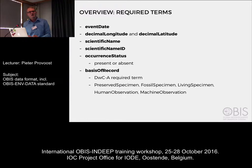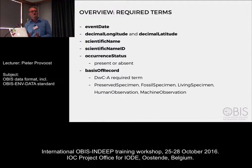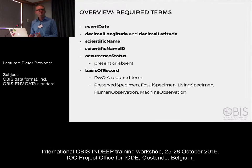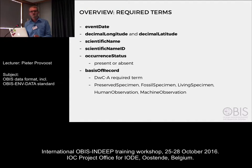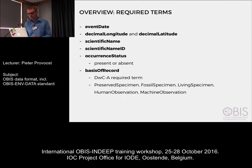This is an overview of our required terms. We have seven that you need to have in every record: event date, coordinates, scientific name, and scientific name ID. We ask you to match all your scientific names with the WoRMS database and add their IDs in your data file. Occurrence status indicates if a record is presence or absence — in the past we had mostly presence data, but we're getting more absence data, so it's important to indicate that. Finally, basis of record is the only term required for Darwin Core archives. The most commonly used values are human observation and machine observation.